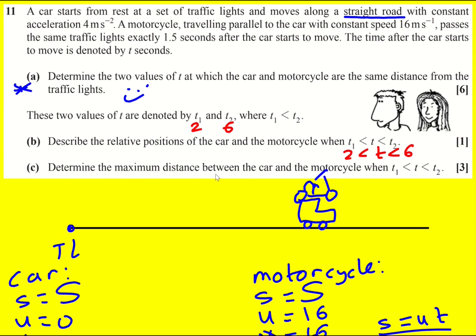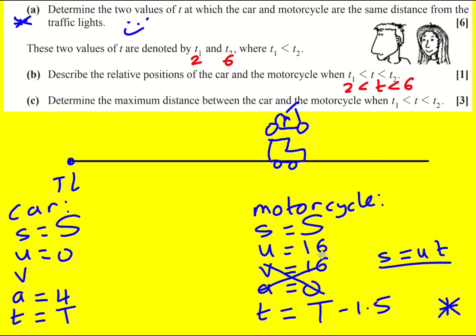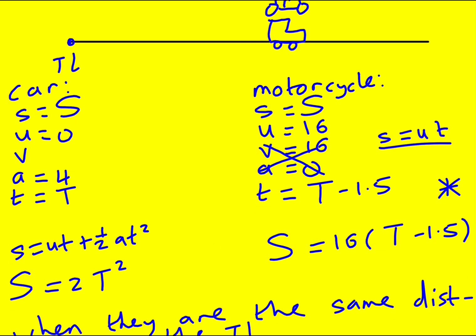So we're asked to determine the maximum distance between the car and the motorcycle between time is 2 and time is 6. So remember, we've got at 2, they are in line. And then at 6, they're in line. So in between, there's going to be a point at which the motorcycle is getting further away. And then there's going to be a maximum point of that distance, that difference in their displacements, actually, which we're going to use. And then after that, the car is going to catch up until they're in line again.